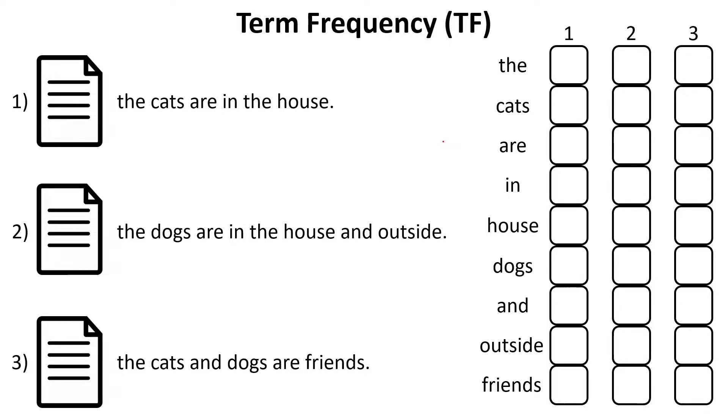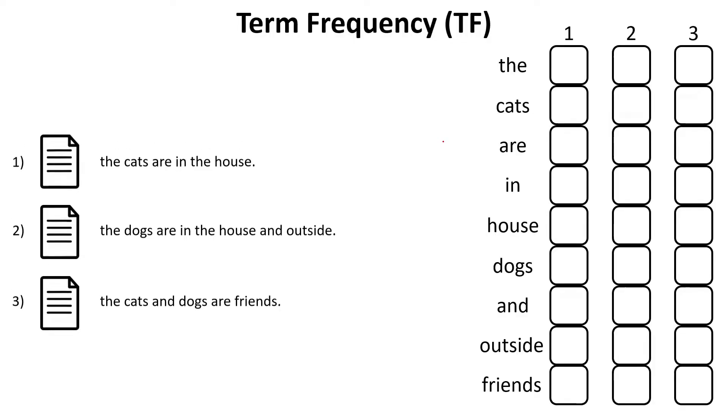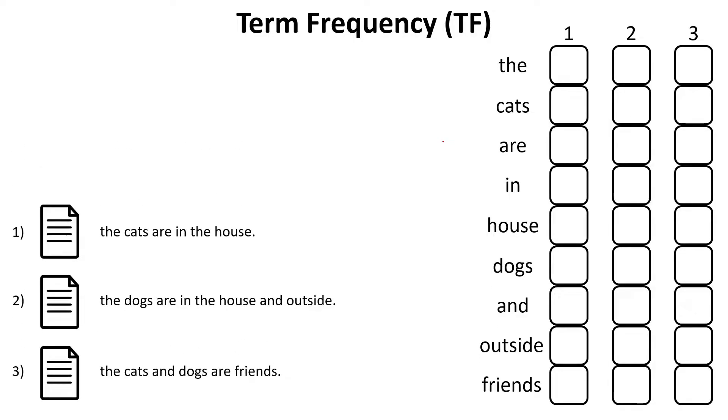And the first part in the TF-IDF algorithm is to compute the Term Frequency of each word found in the document. And you can do that using the following formula. We have the TF, the Term Frequency of your term in the document. And on top, you have the frequency of the term in the document divided by the sum of all the words found in that document.